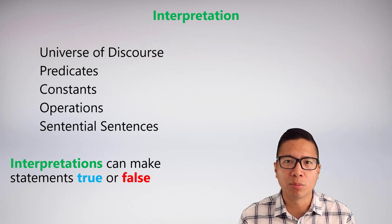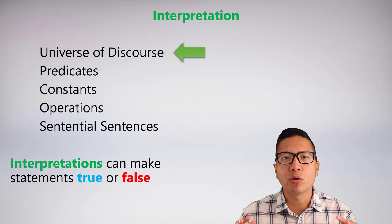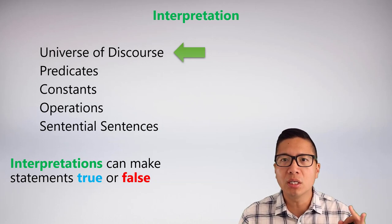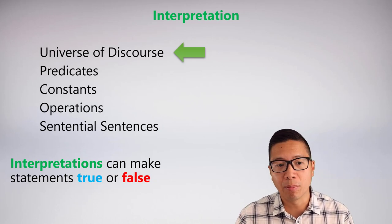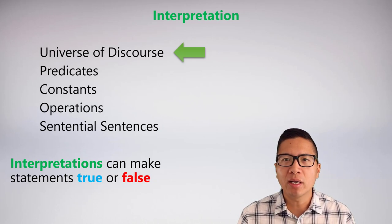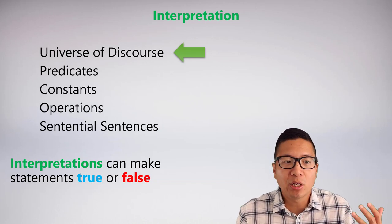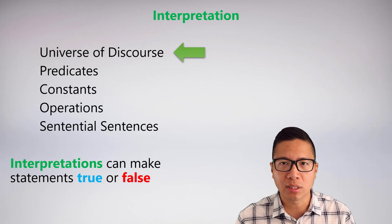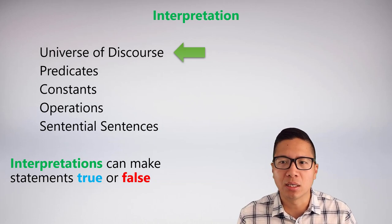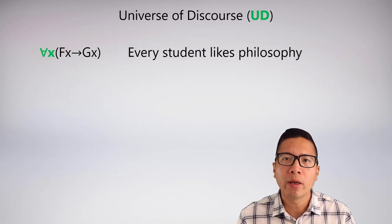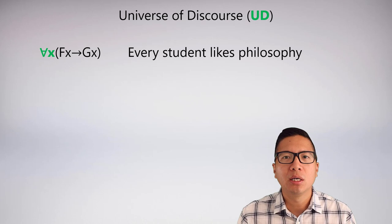The new element in an interpretation is the universe of discourse. I'll go through what a universe of discourse is and how it impacts meaning. What you need to know right now is that an interpretation can make our statements true or false depending on how we define the universe of discourse, predicates, constants, and what they mean.